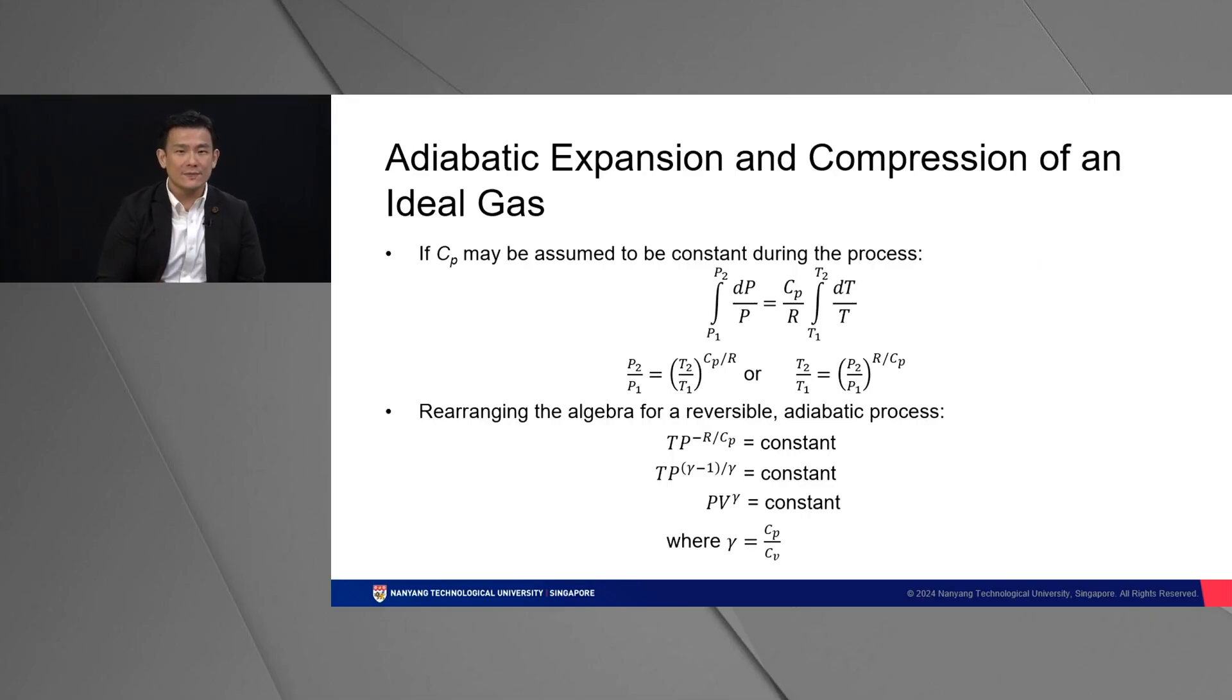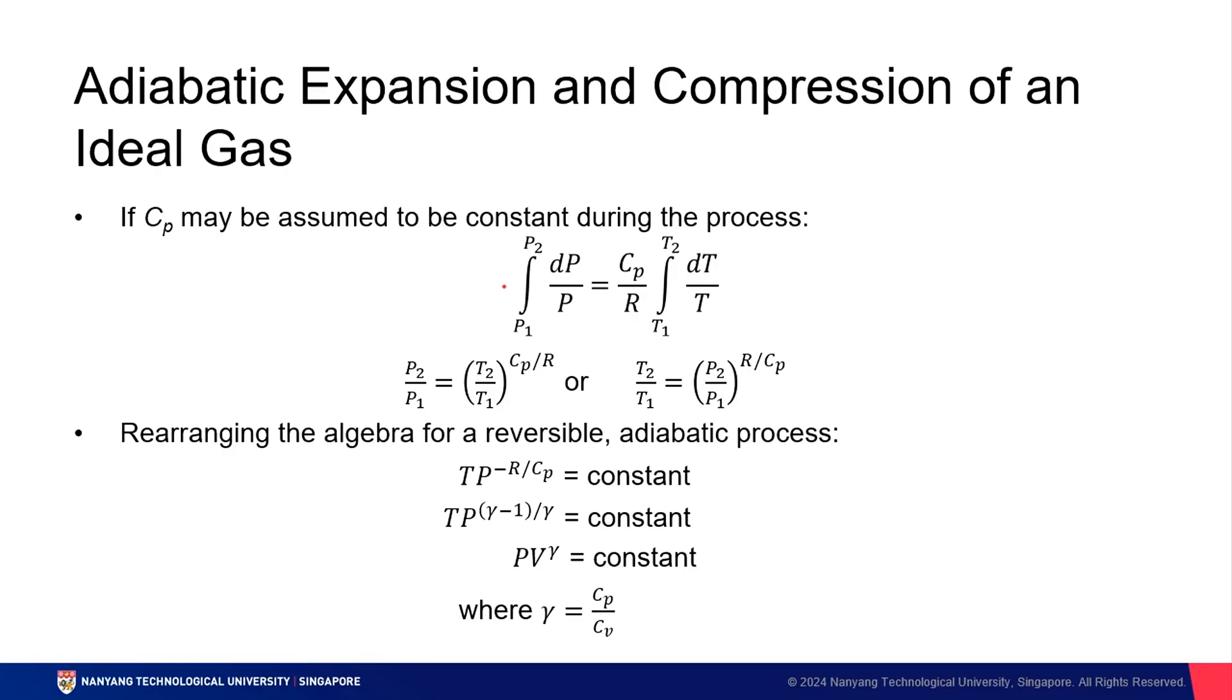So we assume that Cp is constant during the entire process. And if we integrate both sides, eventually we will decompose both sides into these expressions over here. Now I'm not going to go through this lengthy bit of gymnastics over here. It's available in your notes. However, the most important part is to know that these two expressions eventually will decompose into these three constants.